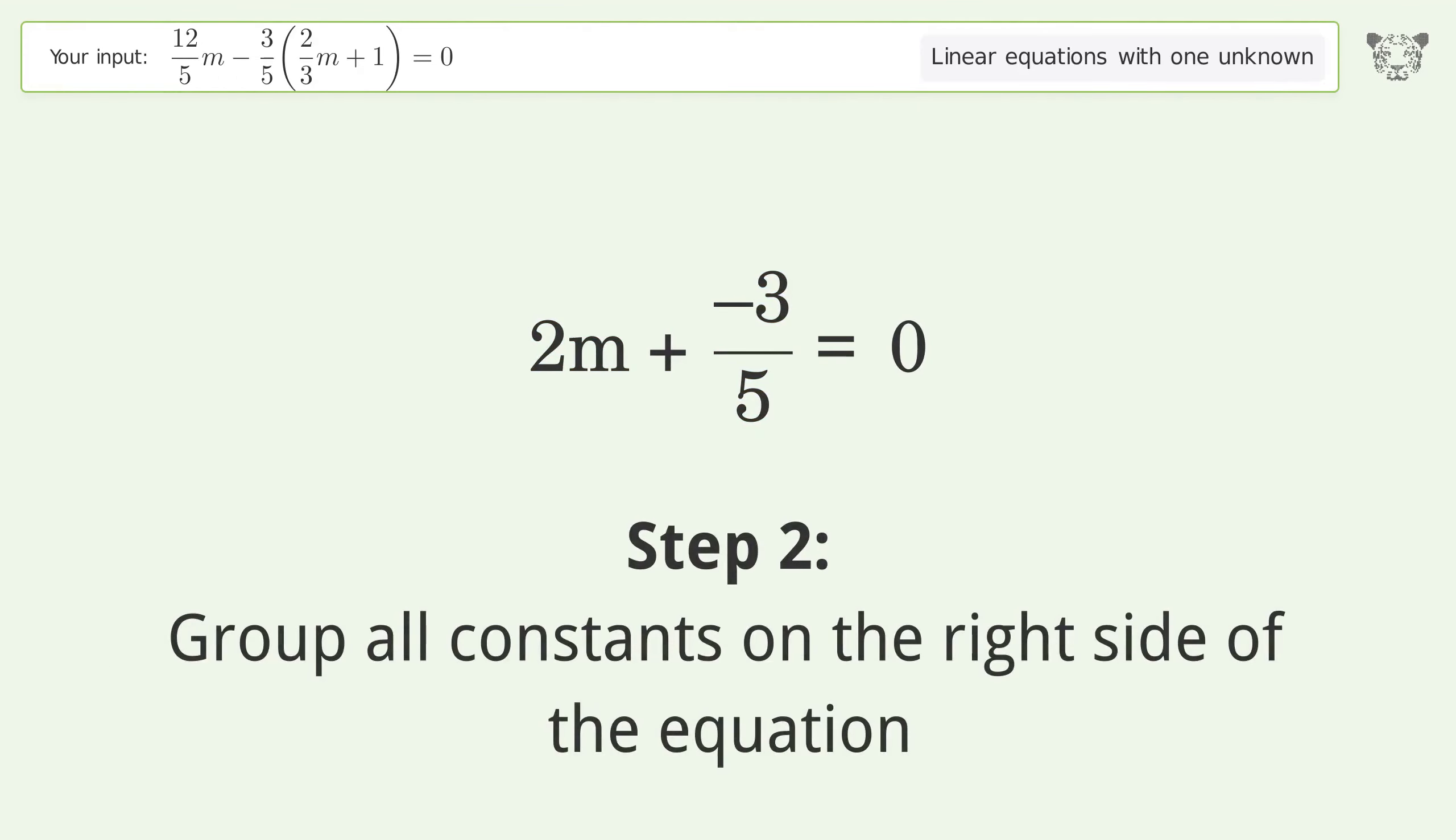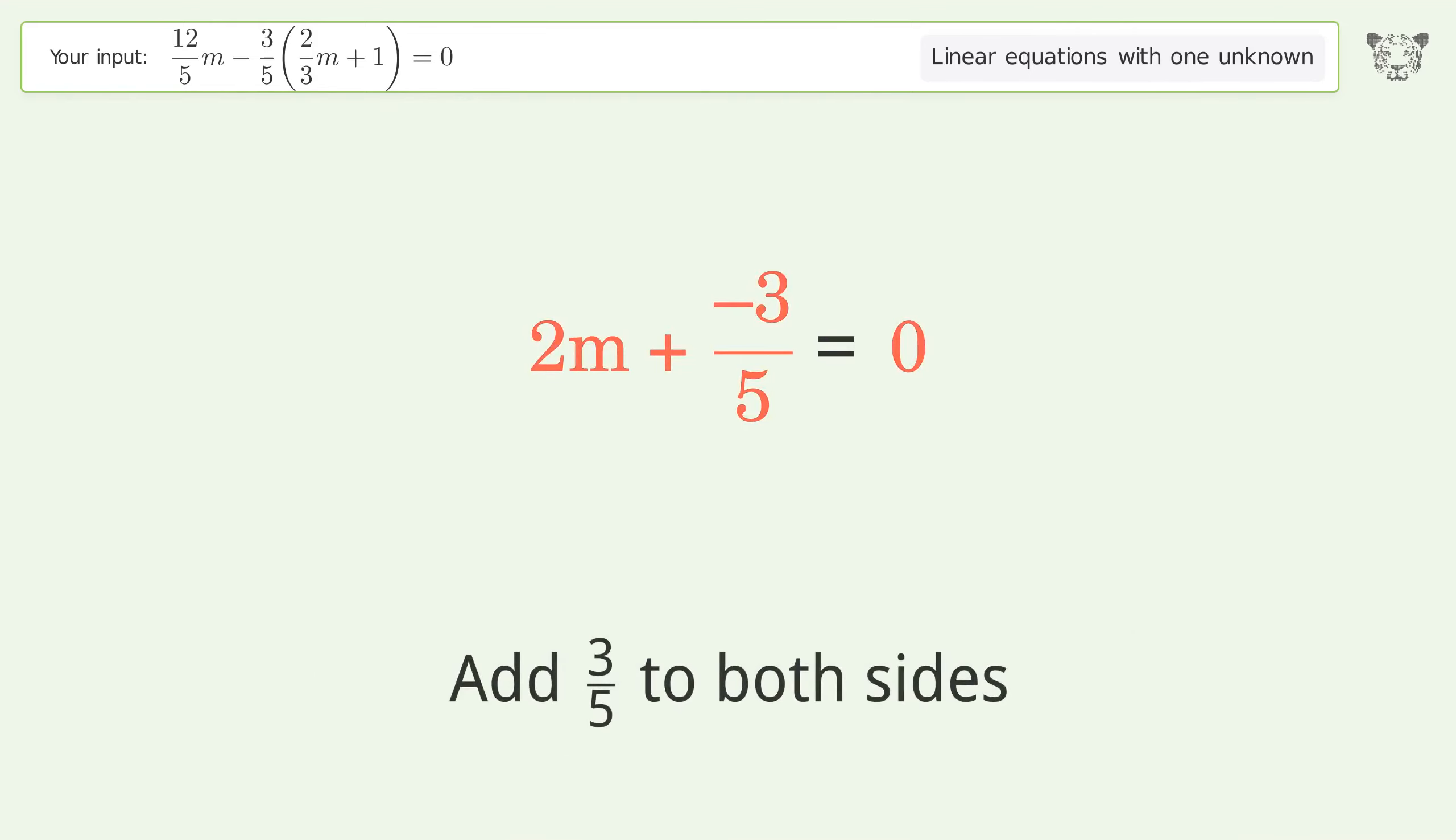Group all constants on the right side of the equation. Add 3 over 5 to both sides.